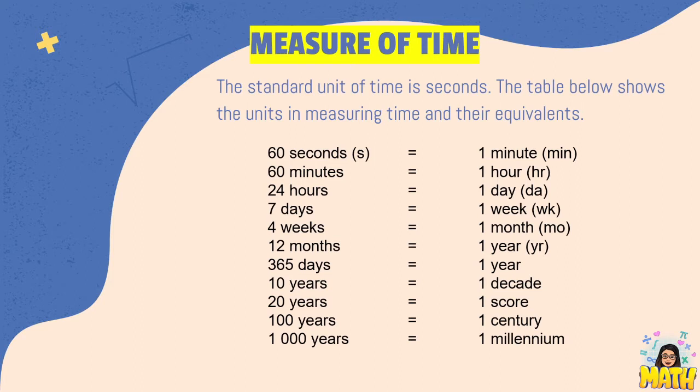60 seconds equals one minute, 60 minutes equals one hour, 24 hours for one day, seven days in one week, four weeks in a month, 12 months in a year, 365 days means one year. 10 years equals one decade, 20 years equals one score, 100 years means one century, and 1,000 years means one millennium.